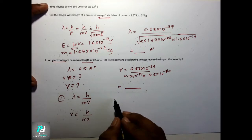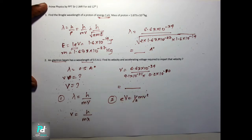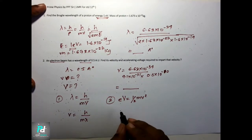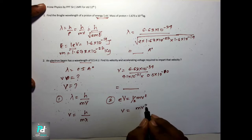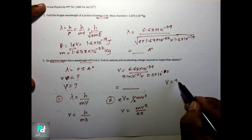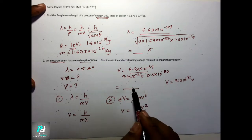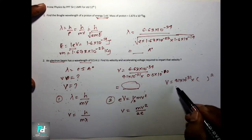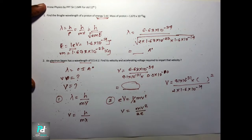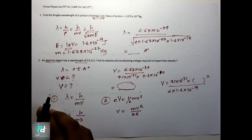Once you have velocity, find the accelerating voltage. Use the shortcut: eV equal to half mv². From this, potential V equals mv² upon 2e. Mass is 9.1×10⁻³¹ for electron, charge is 1.6×10⁻¹⁹. Substitute and calculate. Since you have already studied the theory, all these sums can be done easily — they are very very simple.